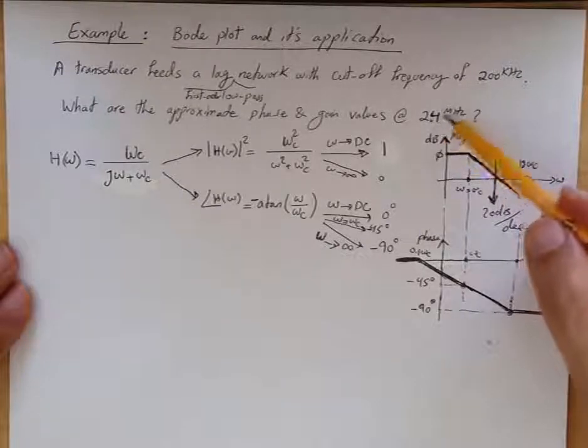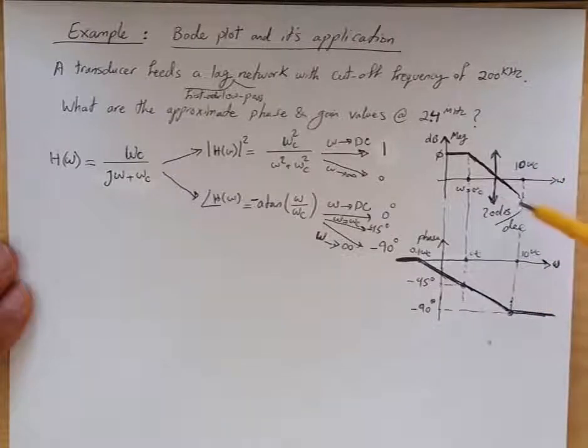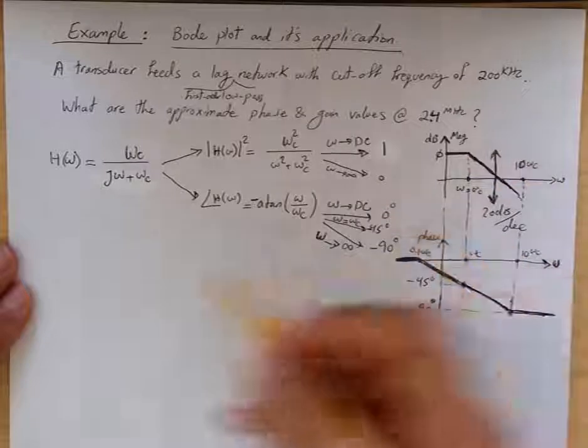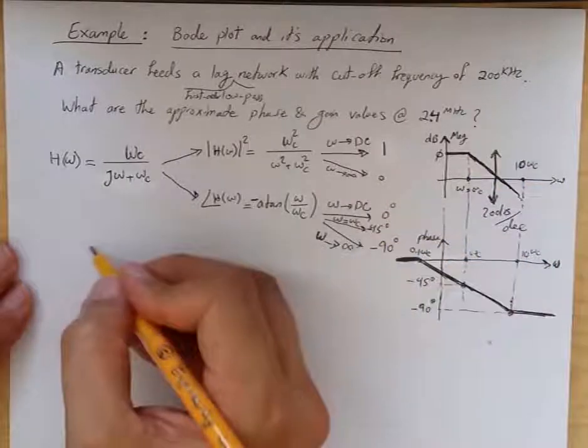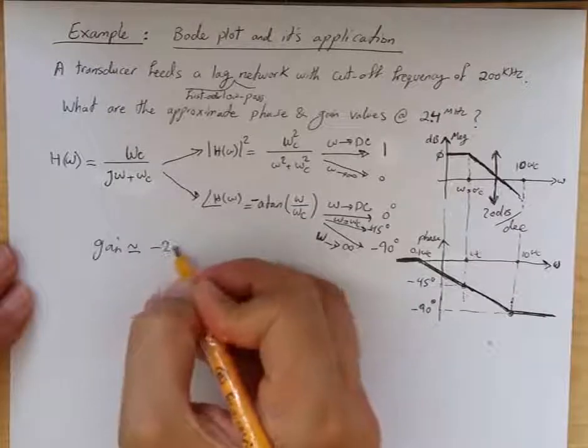it's roughly 10 times more than that. So we are beyond this point. We can approximately say that the magnitude or gain value would be at least 20 dB less than what it was.